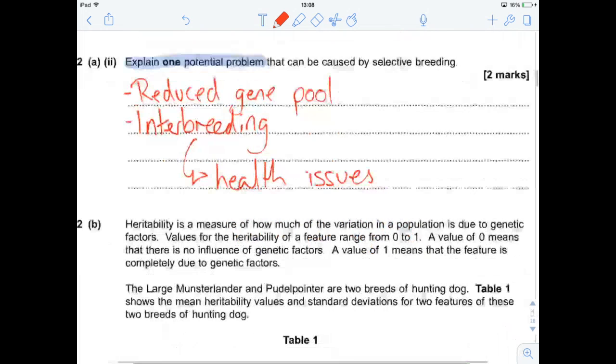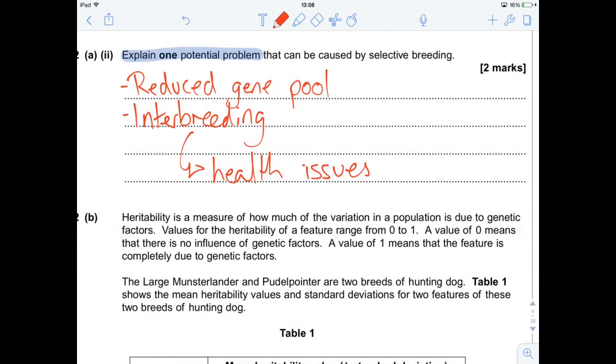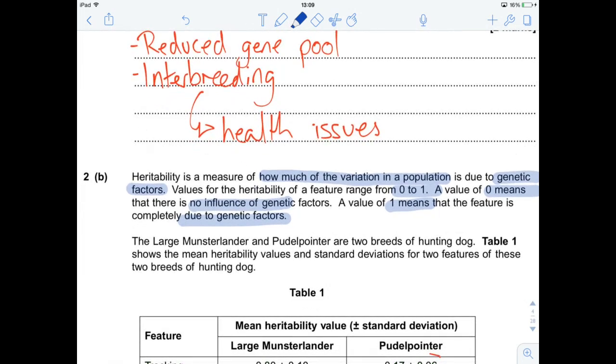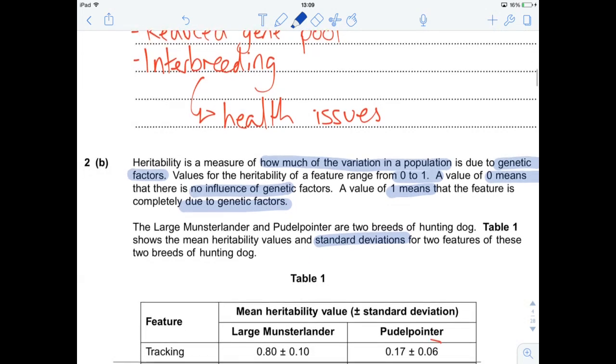So let's have a look. Big old paragraph of text to read. Heritability is a measure of how much the variation of population is due to genetic factors. Values for the heritability of a feature range from 0 to 1. A value of 0 means there is no influence of genetics. A value of 1 means that the feature is entirely due to genetic factors. The large munsterlander and poodle pointer are two breeds of hunting dog. Table one shows the mean heritability values and standard deviations for two features of these two breeds of hunting dog. When you see standard deviations, you must be thinking there's a question coming asking about overlap, which we'll get to.